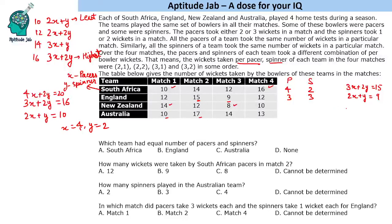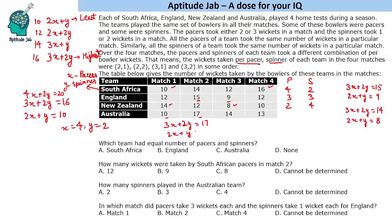Solving for New Zealand with the lowest value giving x = 2 and y = 4. Then solving for Australia, x comes as 3 and y comes as 4, so Australia has 3 pacers and 4 spinners.